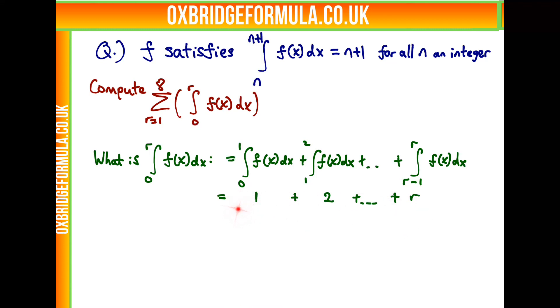How might we sum this? Well, this is an arithmetic series with first term 1 and common difference 1, which gives us a formula of half r times r plus 1.